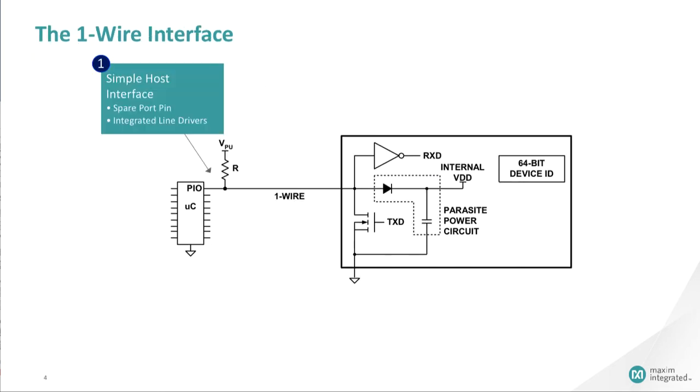Maxim's one-wire communication protocol is a simple signaling protocol that allows for use directly off of a spare port pin of a microcontroller or FPGA. There are protocol conversion devices that allow people to convert from either RS-232 to one-wire or I2C to one-wire. A typical one-wire network consists of a single master connected to one or more slaves via the one-wire bus.